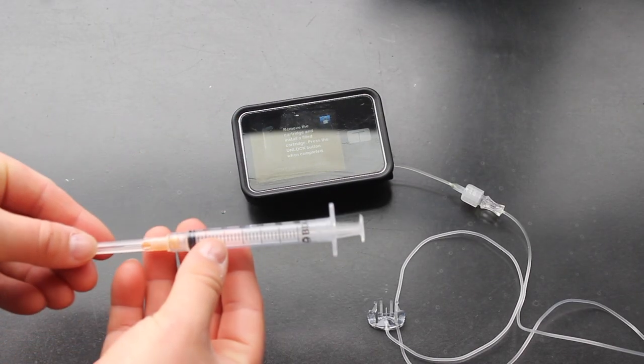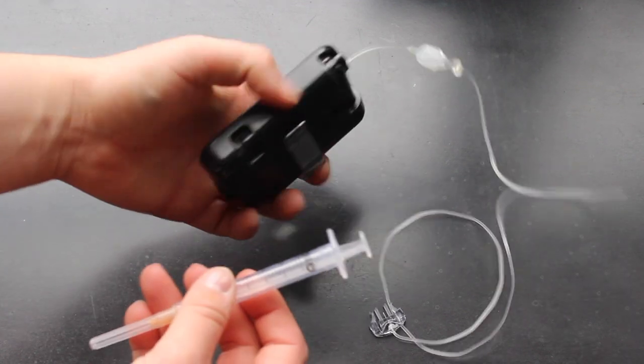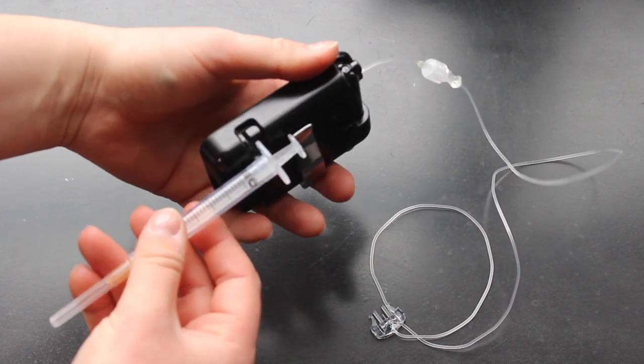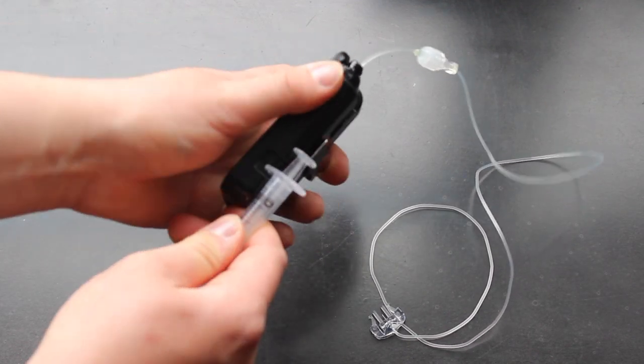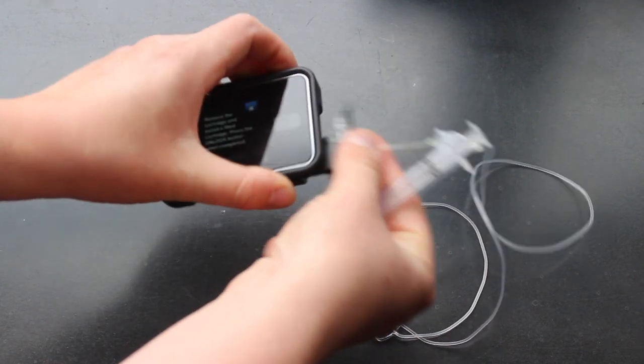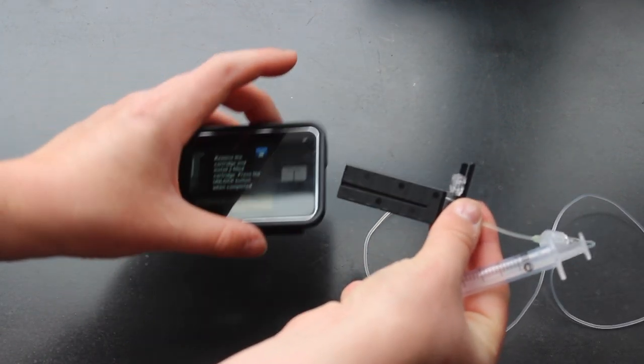To take the old cartridge out, I like to use this little trick, which is to use the back of the syringe to slide into this little slot where you can press and pop out the old cartridge.